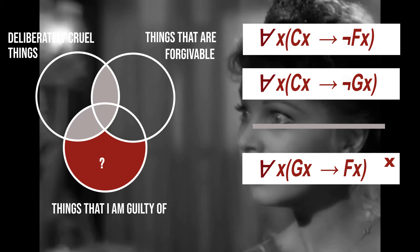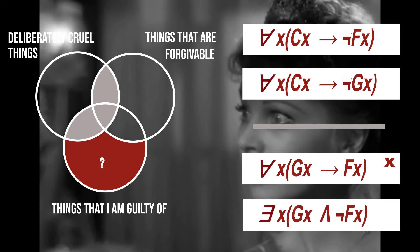For the same reason, we can't tell that she is, in fact, guilty of anything that's not forgivable. We phrase this as: something I am guilty of is not forgivable — the negation of the previous statement. This is also an invalid conclusion, because the same space could be empty. Thus, from what she says, it remains undecided whether she is guilty of unforgivable things or not.